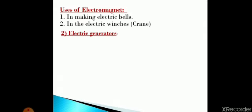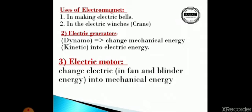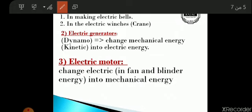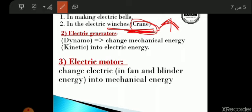The uses of the electromagnet: number one, in making electric bells; number two, in making electric winches or electric cranes. A winch or crane is used to lift heavy objects.